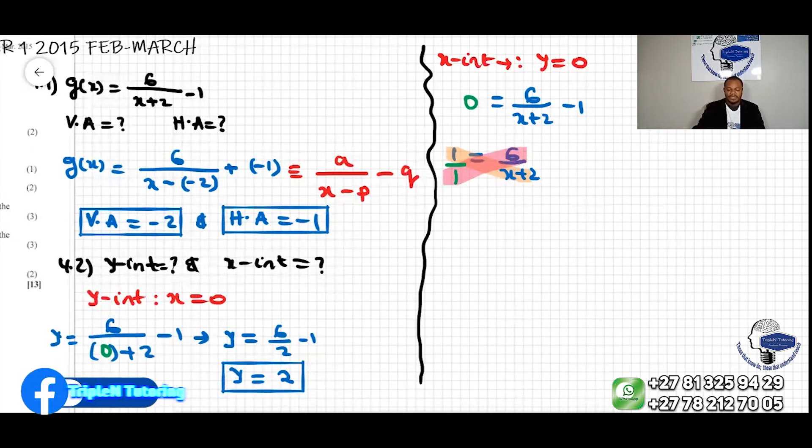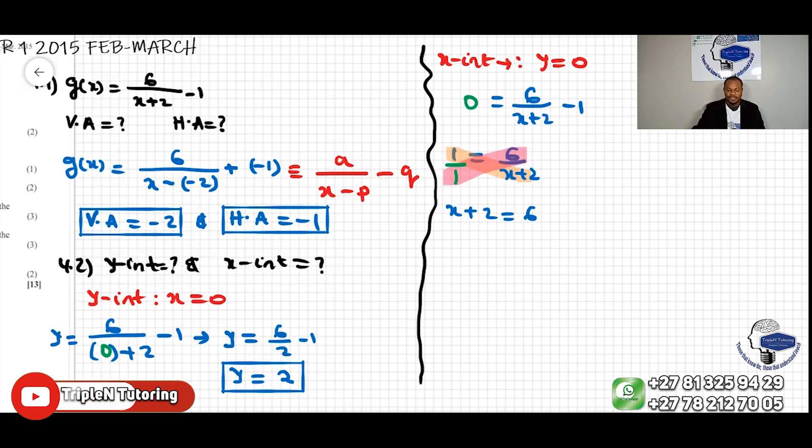1 times x plus 2 makes x plus 2 equal to 6. And then we can continue solving this.